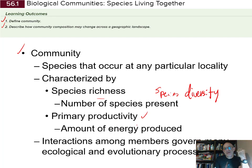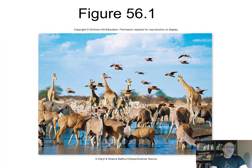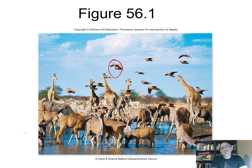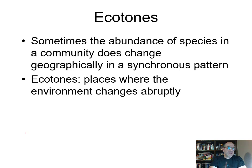Interactions among the members within a community govern many of the ecological and evolutionary processes happening there. Over there we see a community coming to a body of water. It looks like a community of vertebrates — mostly animals — with birds flying in. Ecologists might define the bird community, the mammal community, or the small mammal community, or look more broadly at microorganisms and fish in the water.